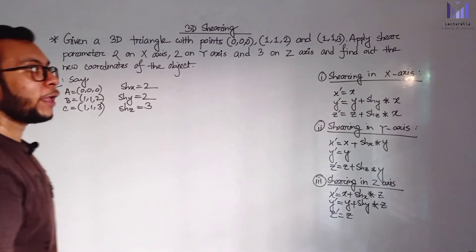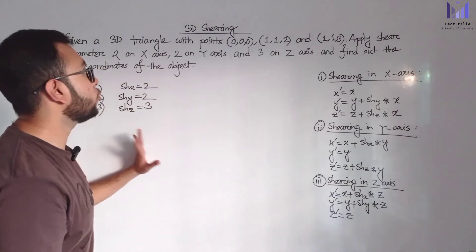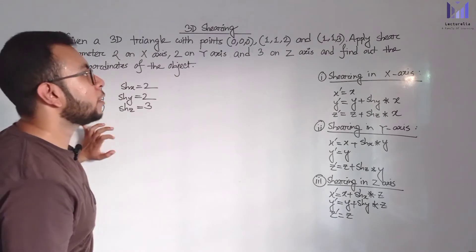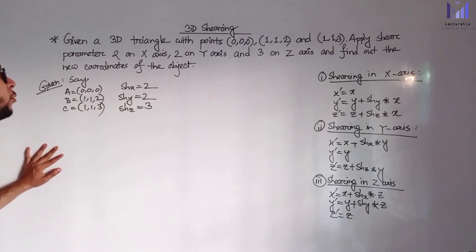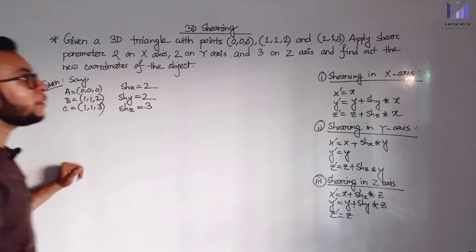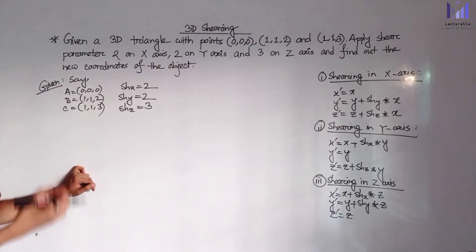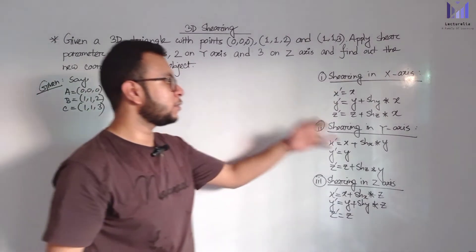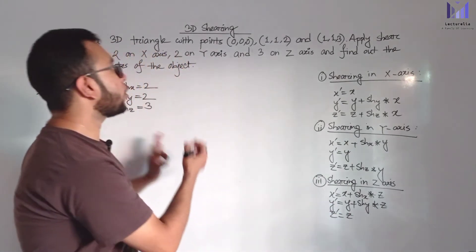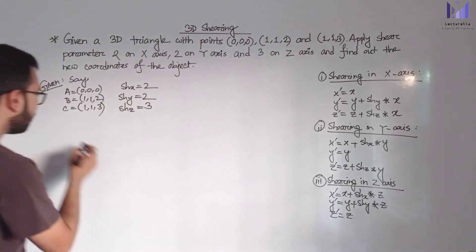The question: given a 3D triangle with points, apply shear parameter 2 on X-axis, 2 on Y-axis, and 3 on Z-axis. Find out the new coordinates of the object. First we apply the shearing method — first, shearing in X-axis.